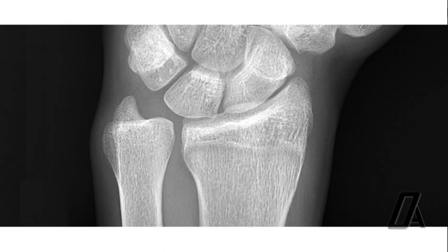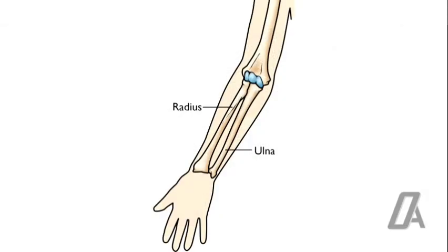Distal ends of radius and ulna also appear in the hand-wrist radiograph. Radius and ulna are the long bones of the forearm. Ulna lies in the medial aspect, and radius in the lateral aspect, when the palm is facing front.